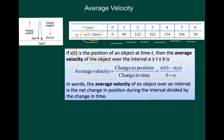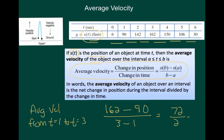So, let's take an example. Let's find the average velocity from time t equals 1 to t equals 3. So, we would say that the change in position would be 162, which is the position at time 3, minus 90, which is the position at time 1, divided by the change in time, which is 3 seconds minus 1 second. That gives us a difference of 72 over 2, or 36 feet per second.